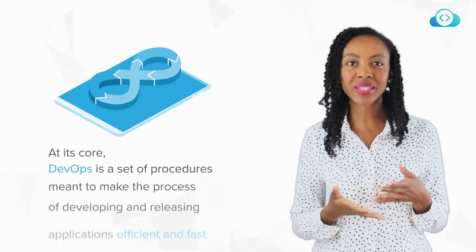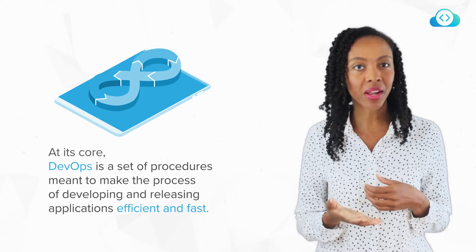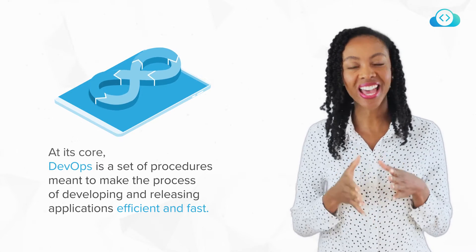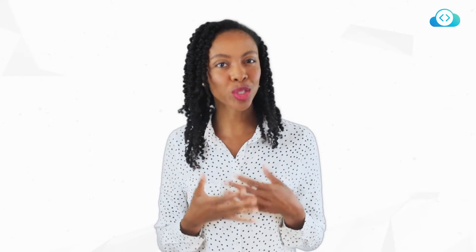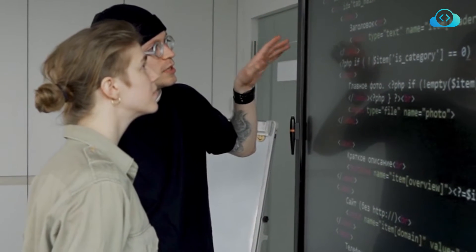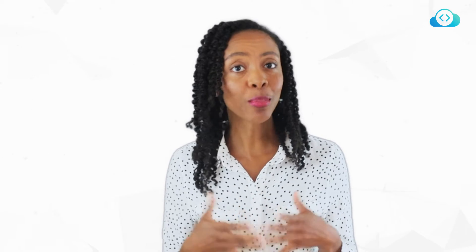At its core, DevOps is a set of procedures meant to make the process of developing and releasing applications efficient and fast. But this sounds pretty abstract. Let's ignore the technical aspects in this video. Instead, let's take a look at the human aspect of developing and releasing apps. It will be easier to understand DevOps if we first look at the problems that it tries to solve.